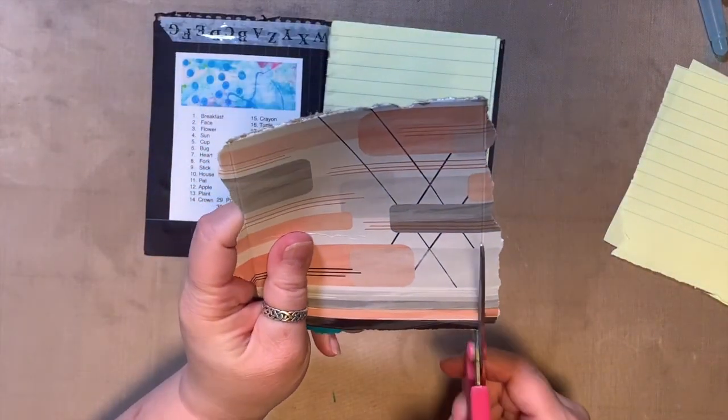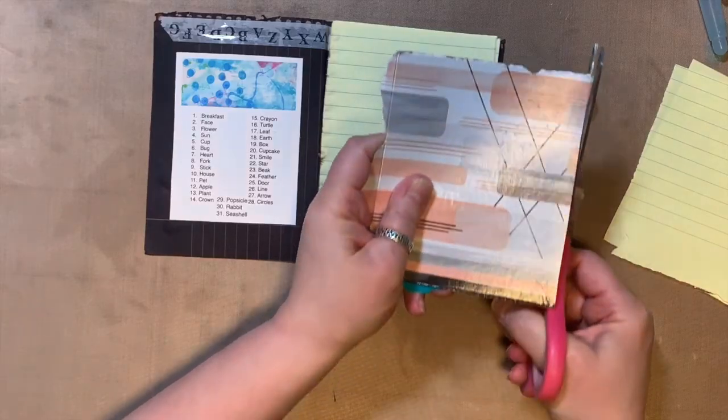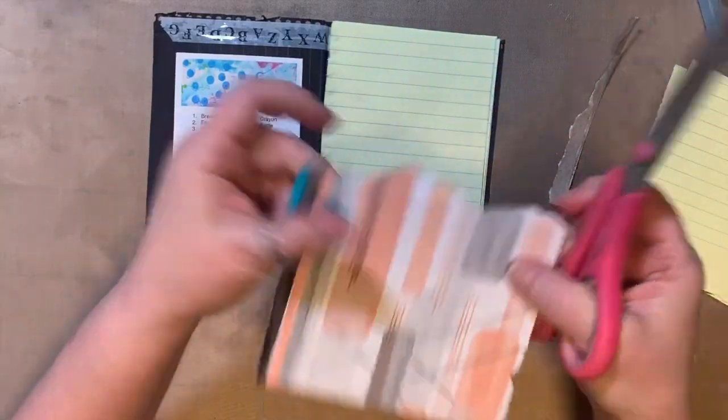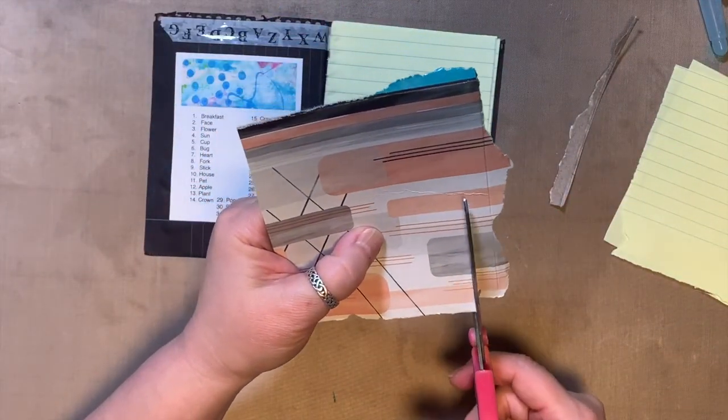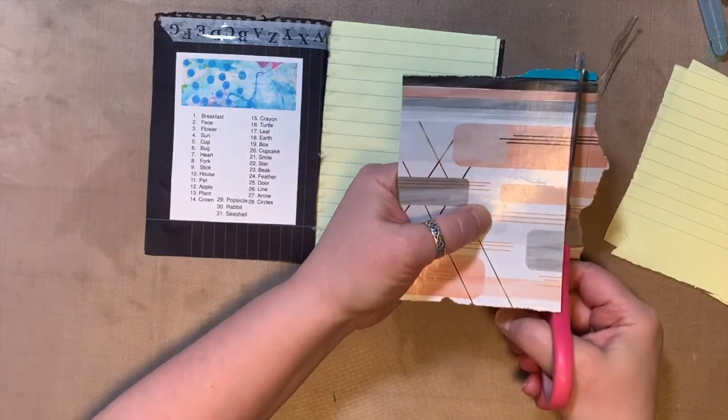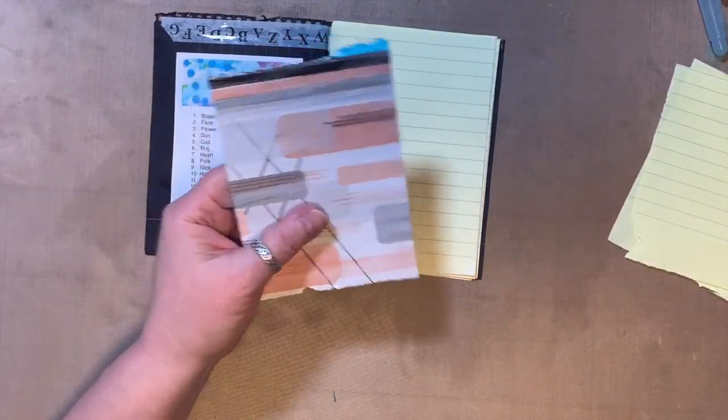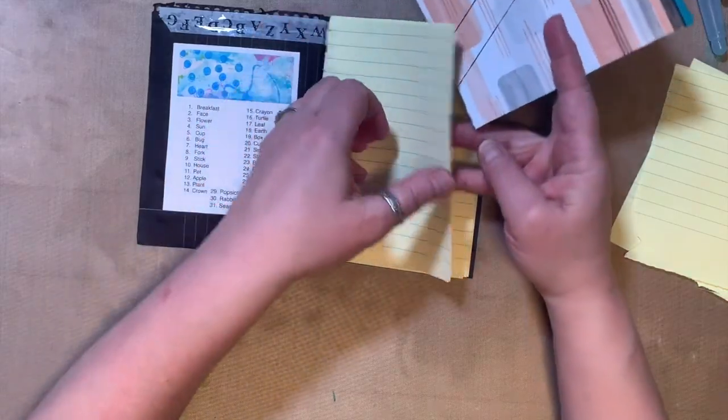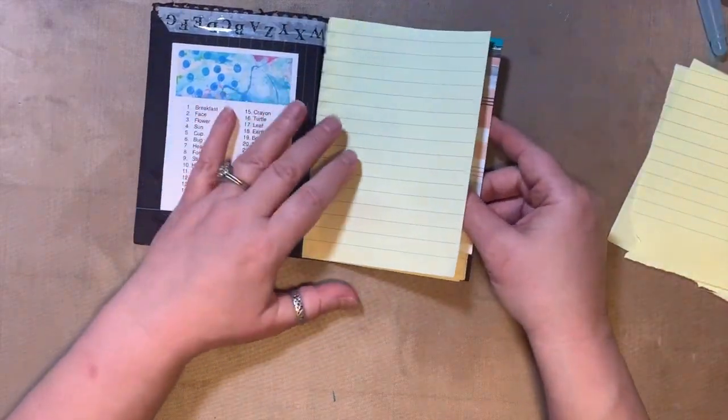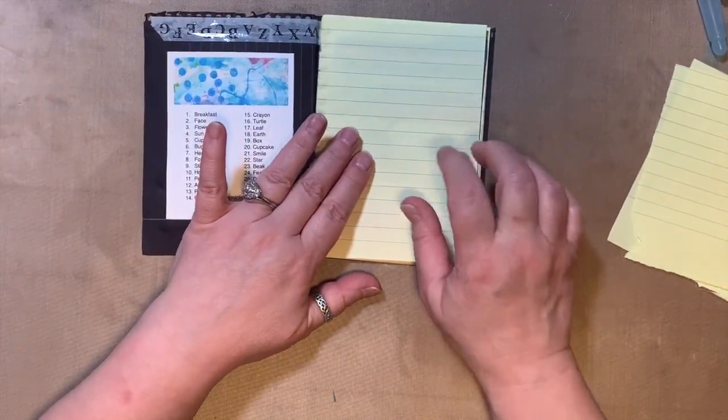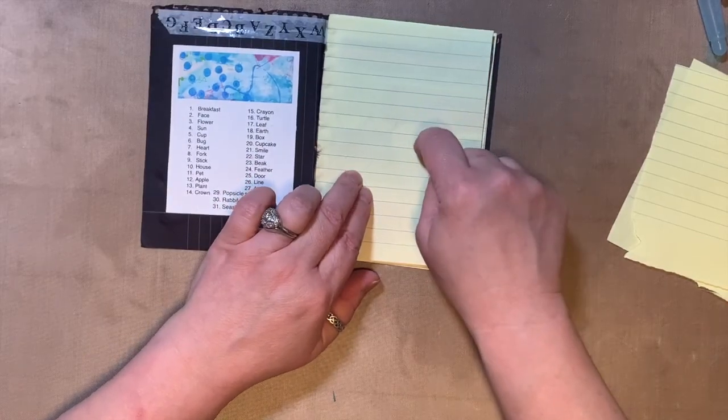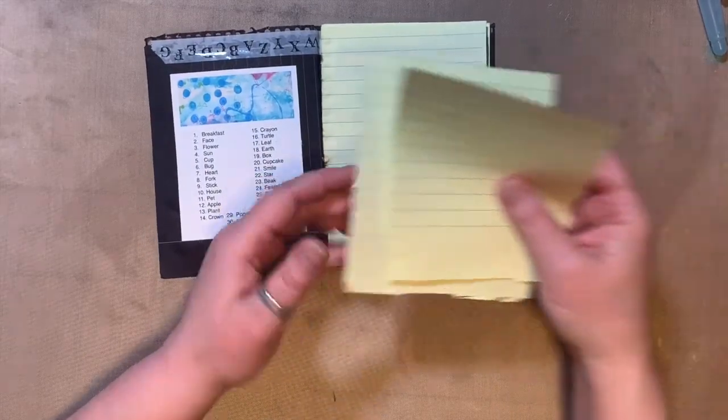You just need a little piece about the same size as your paper. You probably want straight edges on it, so if you're younger, you might want to have somebody help you cut the edges. Just fits a little bit better, then put it underneath the piece of paper you're going to draw on.